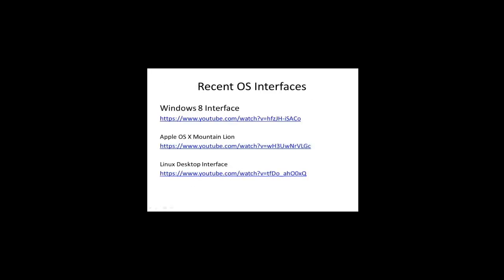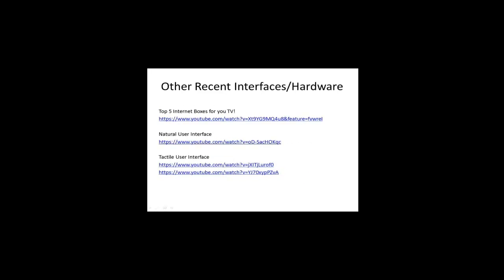Operating systems continue to evolve and incorporate features from multiple platforms. Check out the YouTube clips on the following URLs. There is a selection from Windows 8 through to Apple OS X Mountain Lion, and a variation on a Linux desktop interface. Check out these new interfaces and hardware combinations. The first one is about five top internet boxes for your television. The next one is about a natural user interface, and the last one is a so-called tactile user interface. There's a couple of variations on that one.